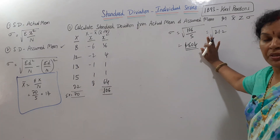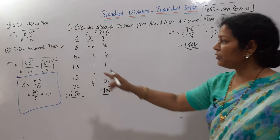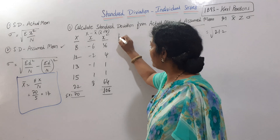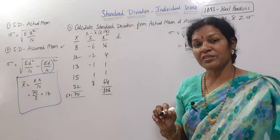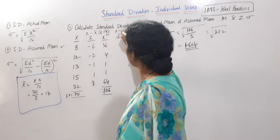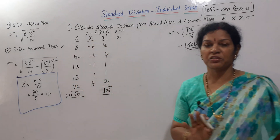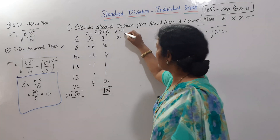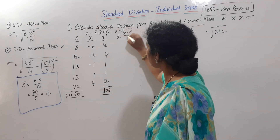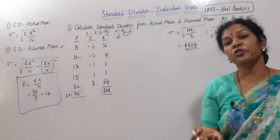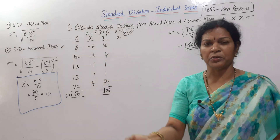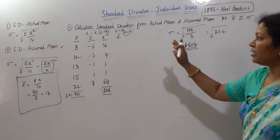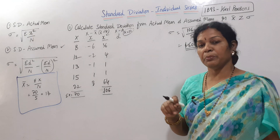Now we will write the assumed mean method. The formula uses sigma D² by n, where D = x minus assumed mean. The assumed mean can be any number. Suppose we assume A = 10. We have the values 8, 12, 13, 15, 22, and A is 10. Now we calculate deviations from A.